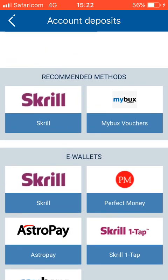What you have to do first is have an account with AstroPay. You can do that by going to Google and searching for astropay.com and creating an account, linking your phone number and email, so that you may deposit from Mpesa, bank, Visa, Mastercard, or cryptocurrencies wallets.